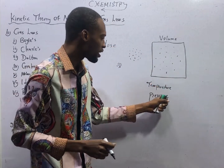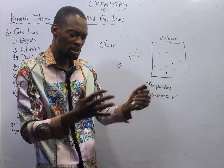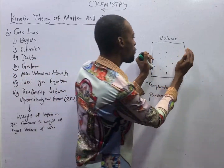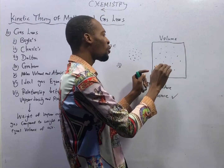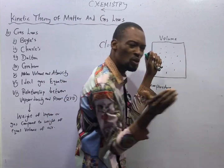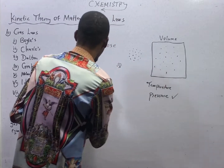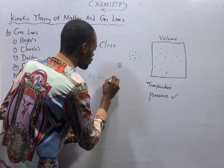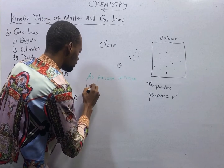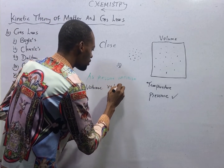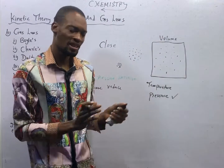Let's start with pressure. If you apply pressure to this gas, pressure means you are pushing them together. As you apply pressure to this gas, you notice that it will not occupy as much space as it is occupying now — it will get closer. You are compressing the gas. The more you compress, the volume will reduce. As pressure increases, volume will reduce.